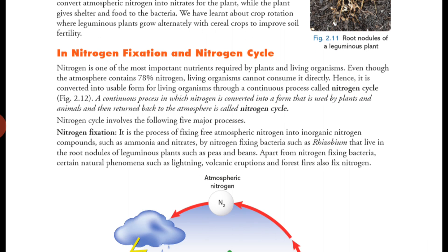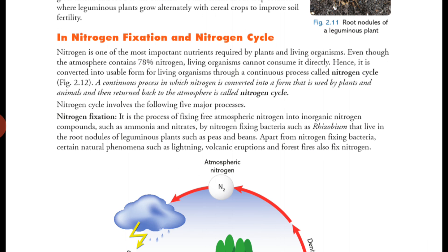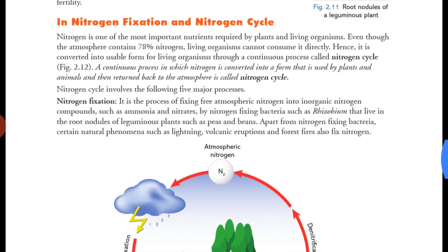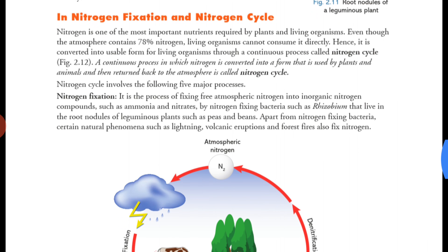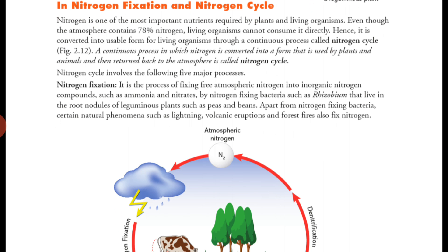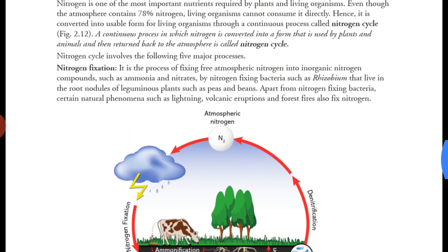A continuous process in which nitrogen is converted into a form that is used by plants and animals, and then returned back to the atmosphere, is called the nitrogen cycle. This is an important definition — you can underline it. Nitrogen moves from the environment into a usable form for plants and animals, and is then sent back to the environment.